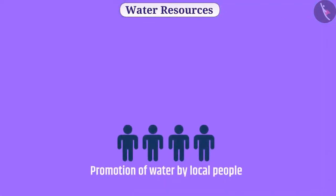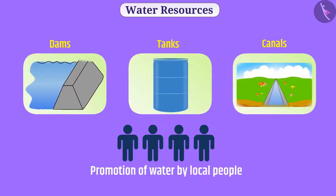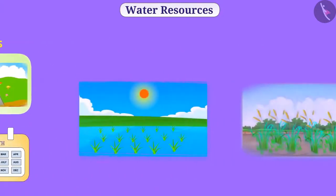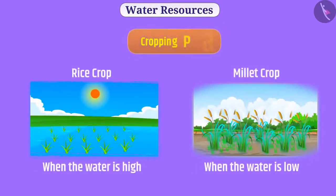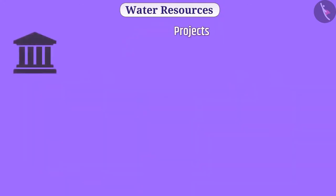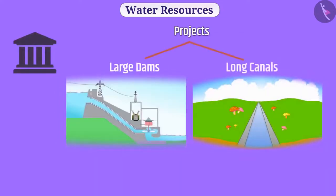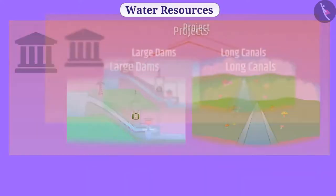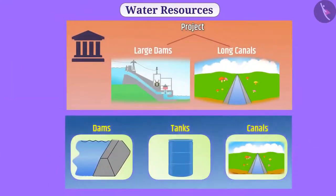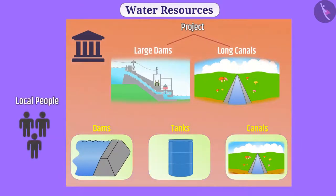Since ancient times, water has been conserved by local people by making dams, tanks, and canals. These reservoirs were managed by local people so that water would be available throughout the year. With the experience of centuries, proper cropping patterns were adopted based on water availability. However, large government projects like big dams and long canals diminished the importance of these local methods, and local people lost control over them.